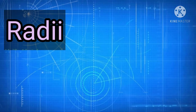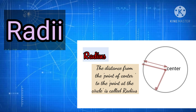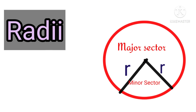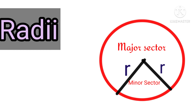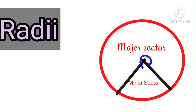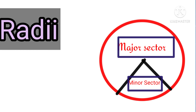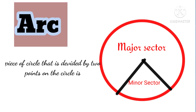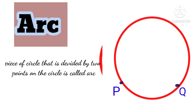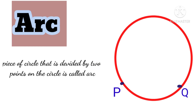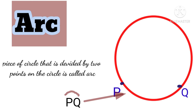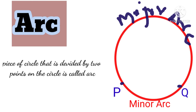Now let's talk about radii. Radii refers to a pair of two radii that divide the circle into a sector, and this pair of radii also makes an angle at the center of the circle. These sectors are called the major sector and the minor sector. Next is arc — an arc is a piece of the circle divided by two points on it. Taking two points P and Q, they divide the circle into two pieces called arcs: a minor arc and a major arc.